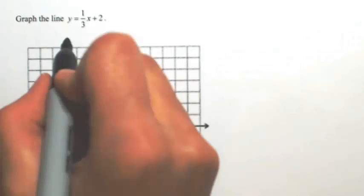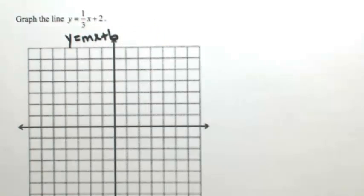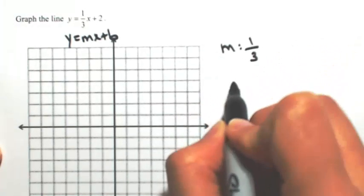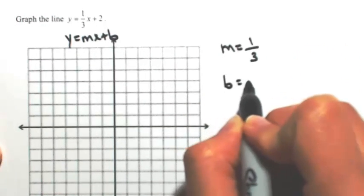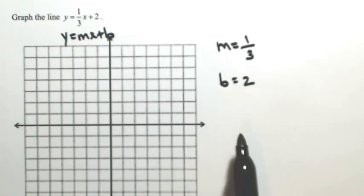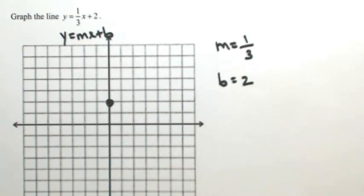Notice first of all that this is in the slope-intercept form of y equals mx plus b. So just matching everything up, we find that m is one-third and b is two. So b is your y-intercept, so I'm going to mark out two on the y-axis, and then I'm going to use my slope to find another point.